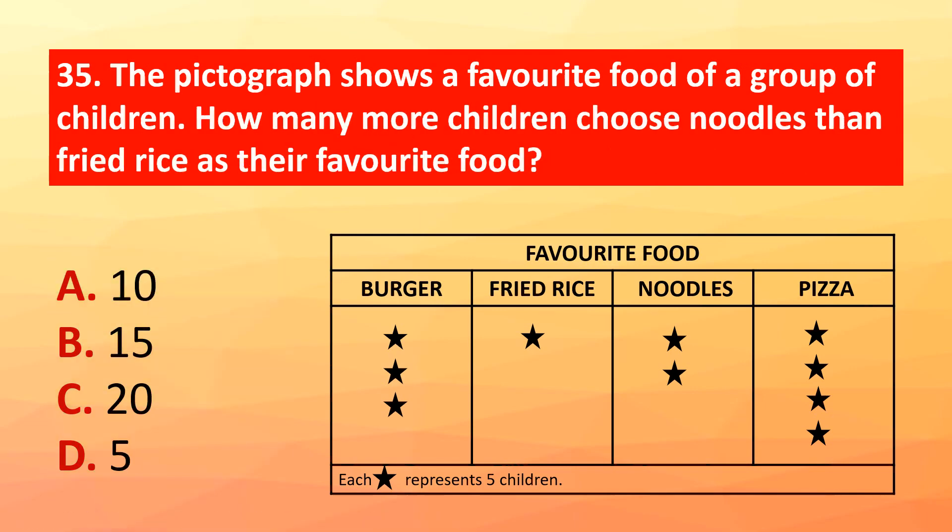Question 35: The pictograph shows the favorite food of a group of children. How many more children chose noodles than fried rice as their favorite food? The correct answer is option D: 5.